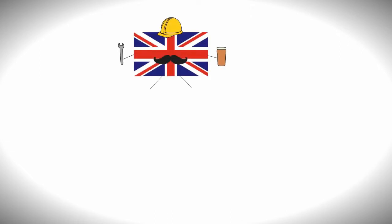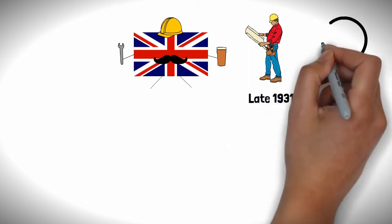Fueled with knowledge and experience from the British, construction on the first line began in late 1931, and Moscow was on its way to getting a plush new metro system.